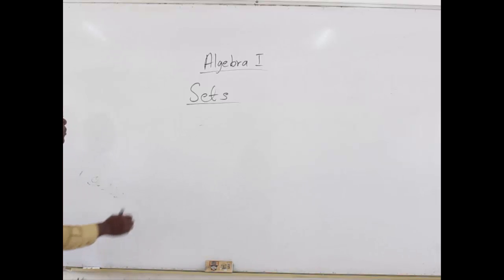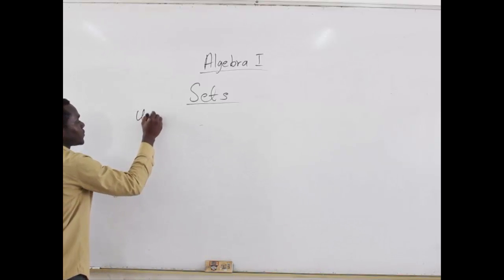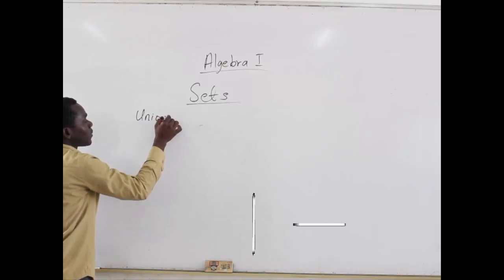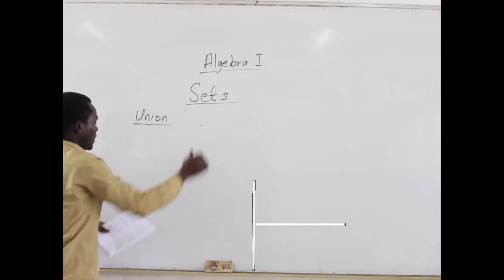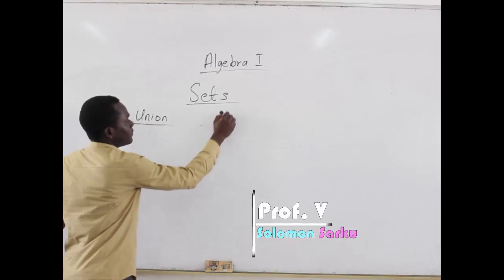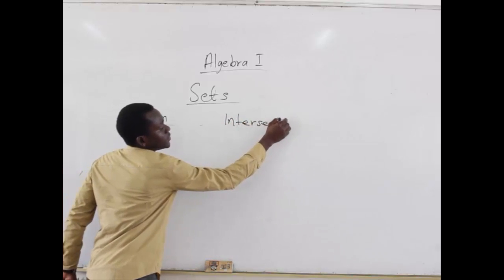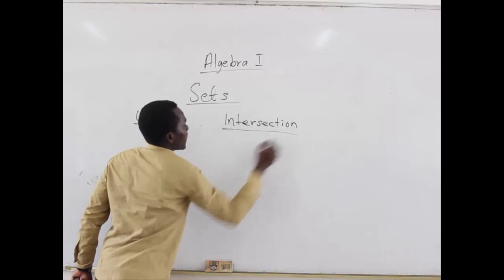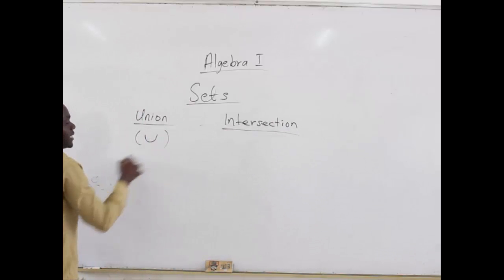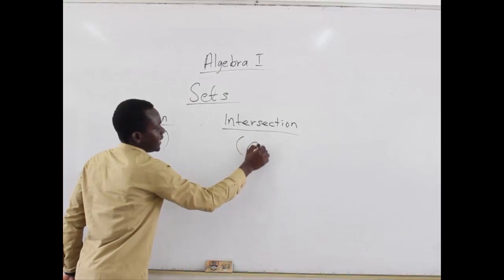The first operation we'll be talking about is the union of sets. After that, we'll also talk about the intersection of sets. We know the symbol for union — that's the U shape — and for the intersection, the N shape.